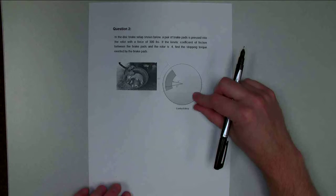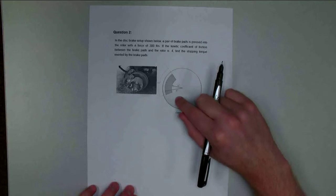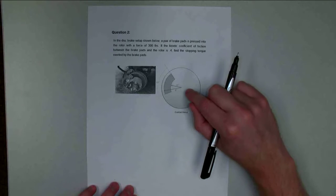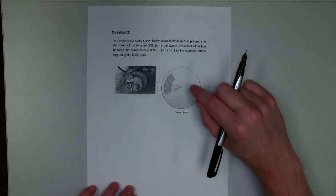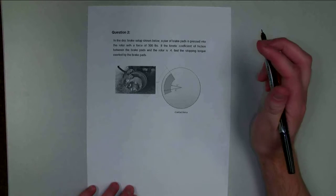We've got a pair of brake pads pinching down on the rotor. Each one has this arc shape with an inside radius of six inches, outside radius of eight inches, and it covers 60 degrees of the total 360 degrees in our circle.